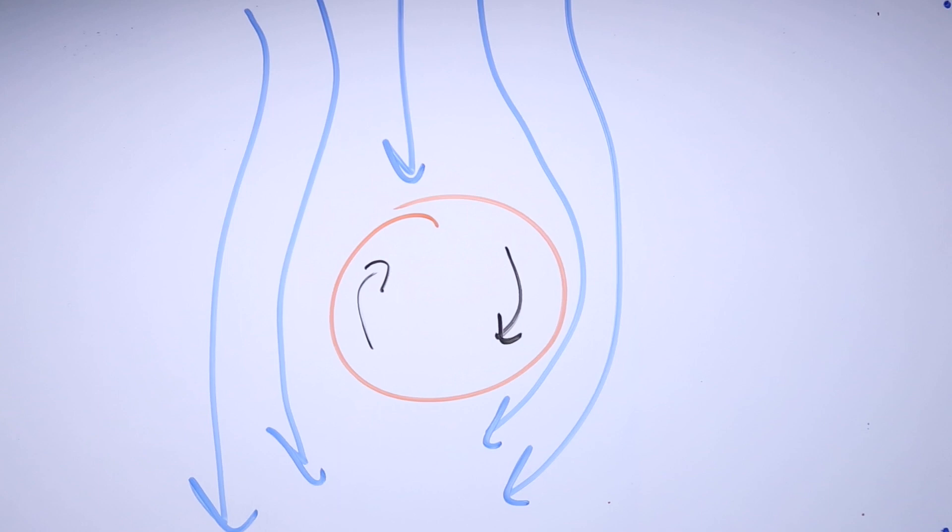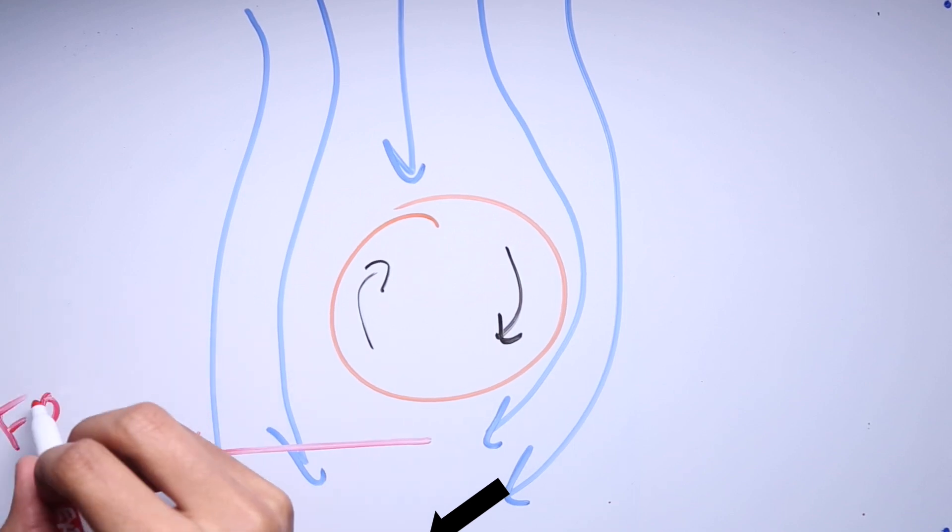However, on the right side, the rotation of the ball grips the air that's flowing in the same direction and forces it around the bottom of the ball, creating a force to the left.